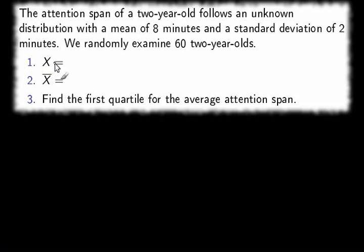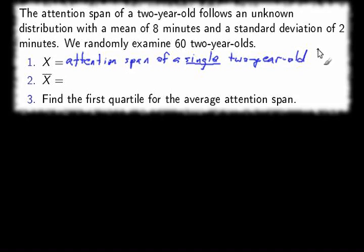Number one, x equals what? The underlying distribution is what? The underlying distribution is the attention span of a two-year-old. That's what's of interest in this problem. So it's the attention span of a two-year-old, and I'm going to emphasize the fact that we're talking about a single two-year-old, and this is in minutes.